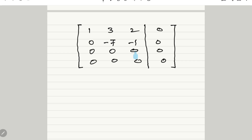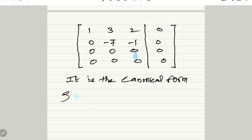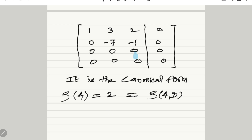This form is called the canonical form. After obtaining it, we find the rank of A and rank of the augmented matrix [A|D]. The rank is the number of non-zero rows. Rows one and two are non-zero; rows three and four are zero rows. Therefore, rank of A equals 2, and rank of the augmented matrix also equals 2. The ranks are equal, but we check whether rank equals the number of unknowns or is less. Unknowns are three, rank is two — rank is less than the number of unknowns.